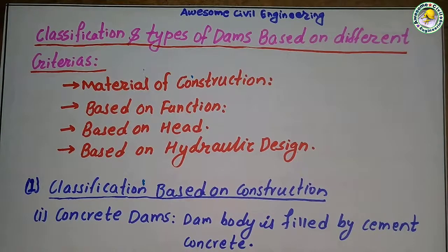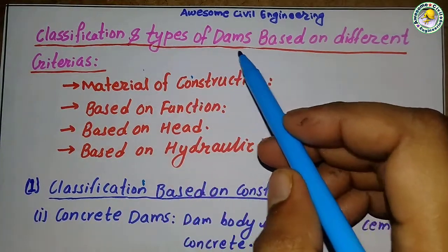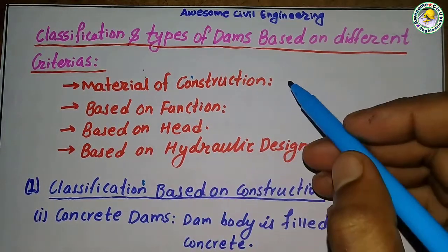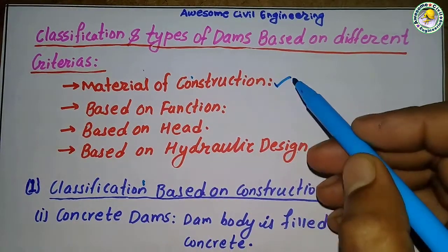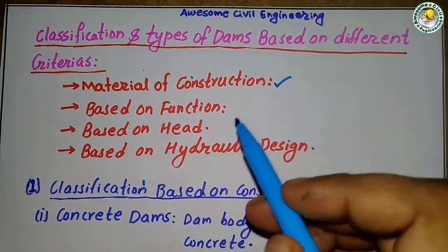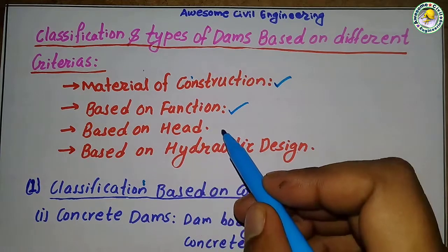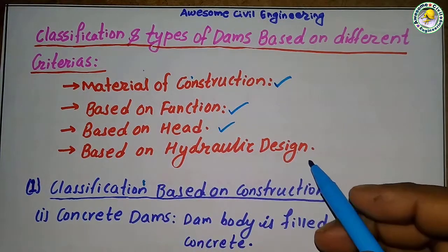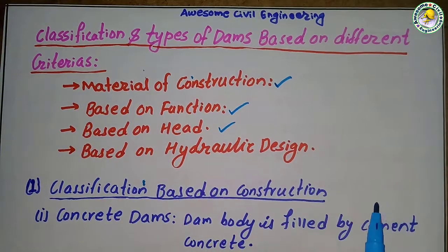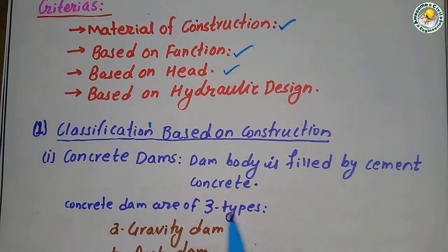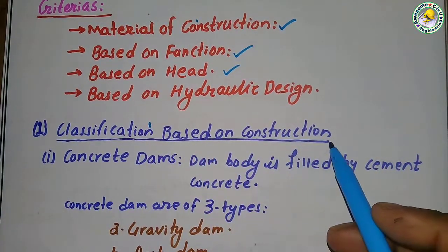Hello friends, welcome to the Awesome Civil Engineering channel. Today we are going to discuss the classification and types of dam based on different criteria. Dams are classified based on material of construction, function, head, and hydraulic design. First, we will discuss classification based on construction.